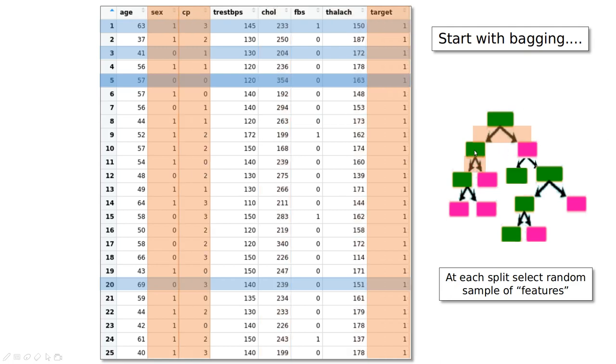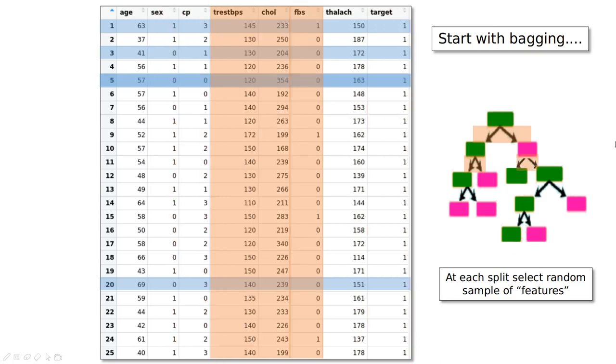And again, in this branch of the tree, we shuffle again, select three features. In this case it's sex, CP, and target, and so on and so forth.